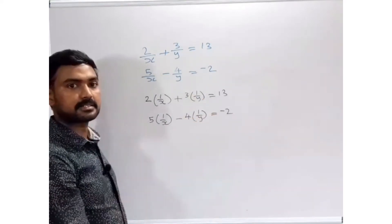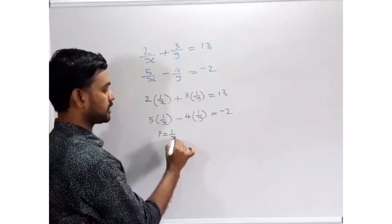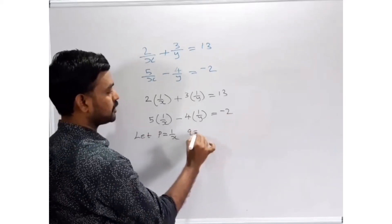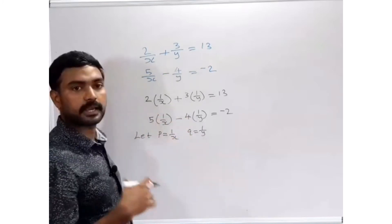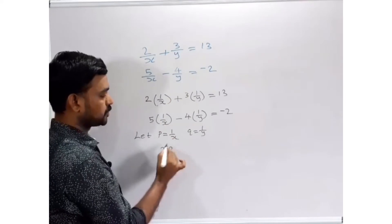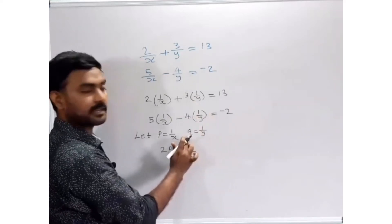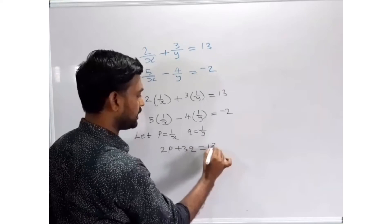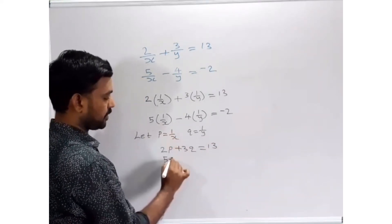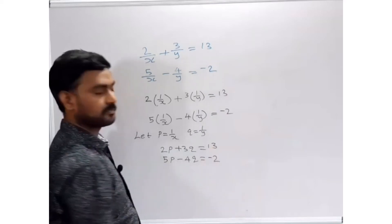We can replace these terms by giving another letter. Let p = 1/x and q = 1/y. Then the two equations can be replaced: instead of 1/x we use p, so the first equation becomes 2p + 3q = 13. The second equation: 5 × (1/x) = 5p, minus 4 × (1/y) = 4q, so 5p - 4q = -2.